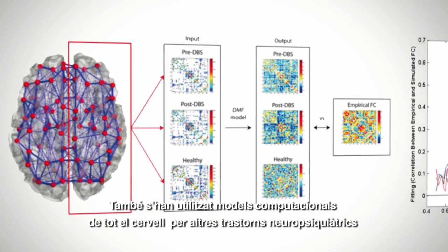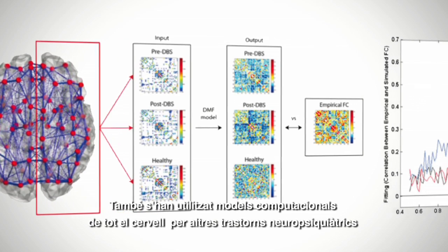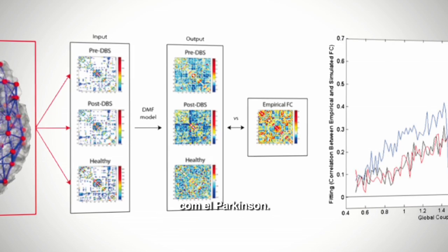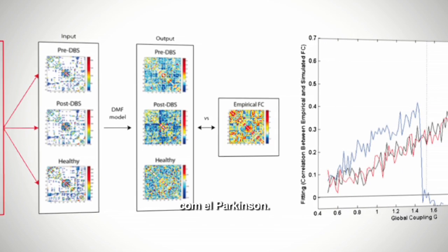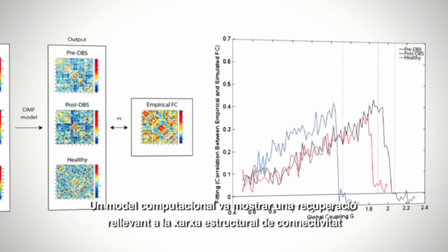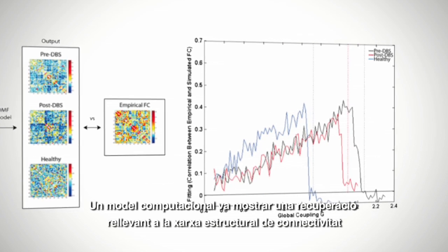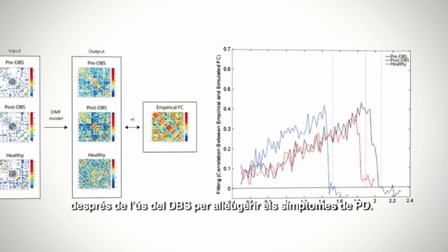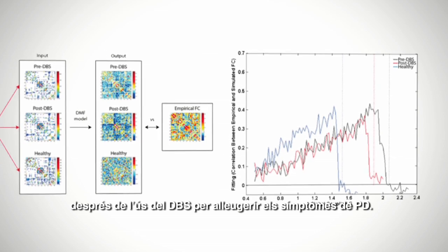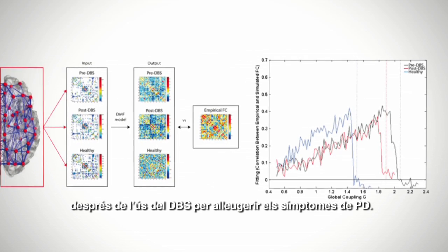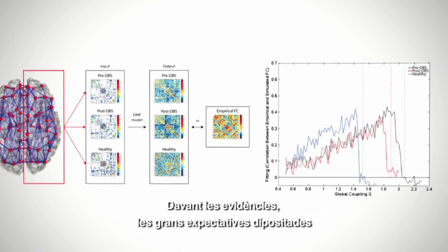Whole brain computational models have also been used for other neuropsychiatric disorders such as Parkinson's. A computational model showed significant recovery of structural network connectivity as a result of using deep brain stimulation to alleviate the symptoms of Parkinson's.